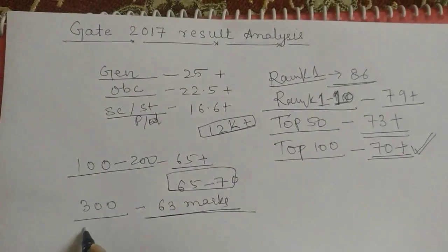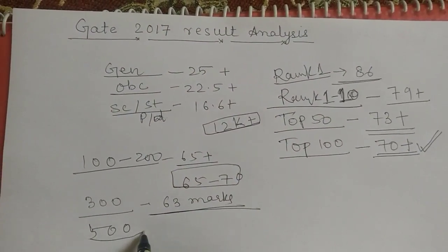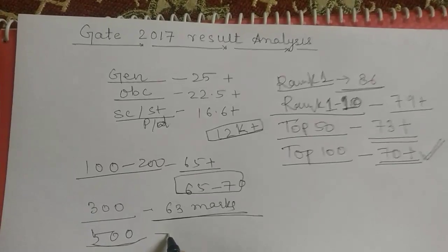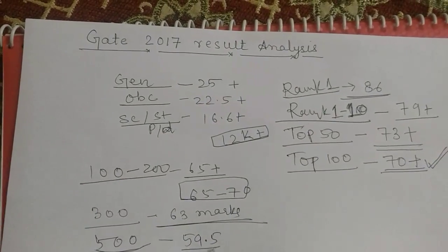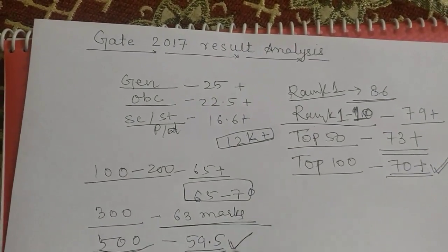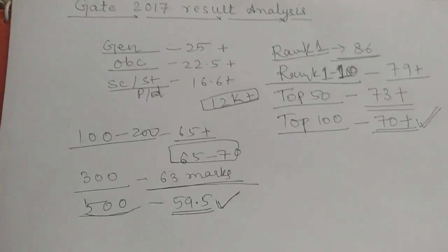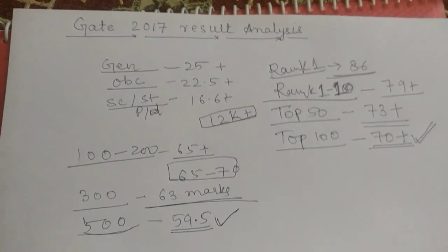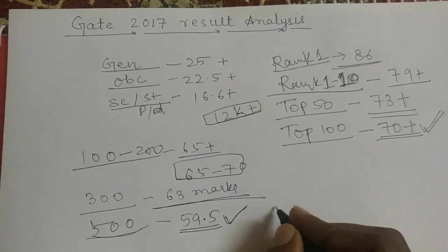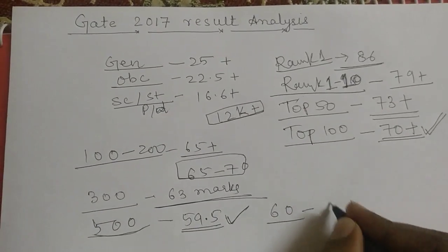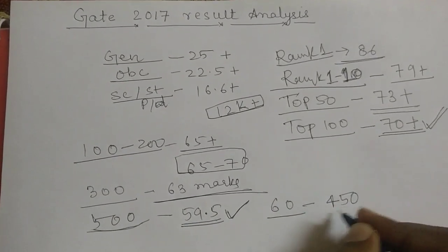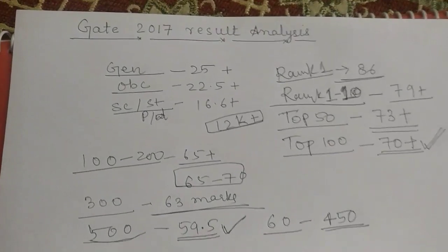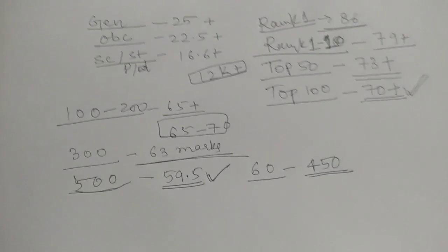Similarly, to be in top 500 which is also considered as a decent score, this year 59.5 marks. At this marks people got 500 rank. We can see this year how tougher was the competition. Because last year a guy who has got 60 marks was around 450 rank. But this year 500 rank was 59.5.